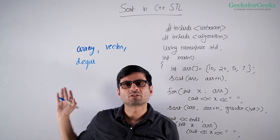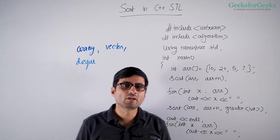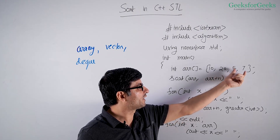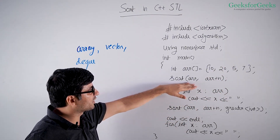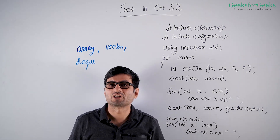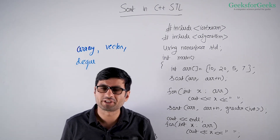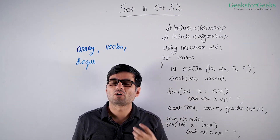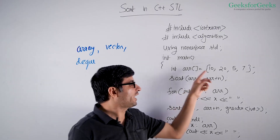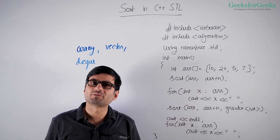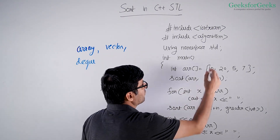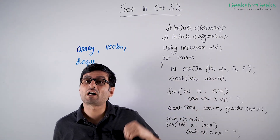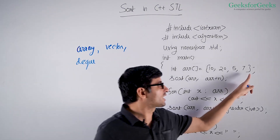Sort can be used to sort elements for all these containers. The sort function in C++ receives two addresses or two iterators. The first iterator or address is the address of the first element — the array name in C++ gives you the address of the first element. The second address is the address after the last element.